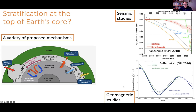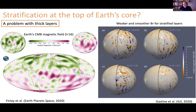There are some oscillations of the geomagnetic field which are compatible with having a stratified layer. That's work by Bruce Buffett and colleagues looking at waves in such a layer — you can match things like fluctuations of the dipole moment by waves in such a layer. However, there's a problem with having thick layers when comparing to the overall structure of Earth's magnetic field.